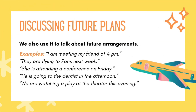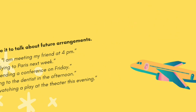Number 3: Discussing future plans. We also use it to talk about future arrangements. Example: I am meeting my friend at 4 pm. They are flying to Paris next week. She is attending a conference on Friday. He is going to the dentist in the afternoon.